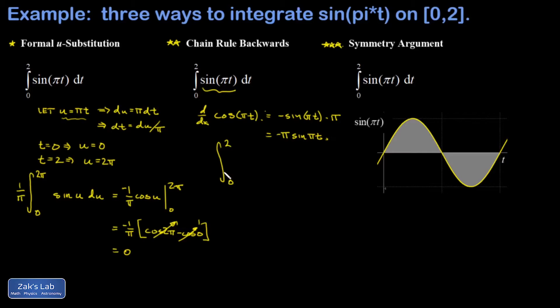All I'm going to do to informally use the chain rule backwards is manipulate the integral by supplying the needed constants into the integrand. I need a negative pi sine pi t in order to have something that's nicely guessable for the antiderivative. Of course, I can't just throw a factor of negative pi inside this thing; I have to compensate out in front with a factor of negative one over pi.